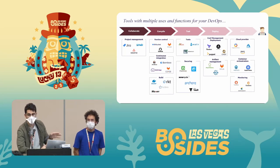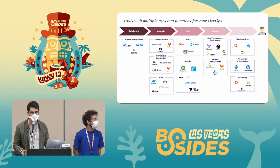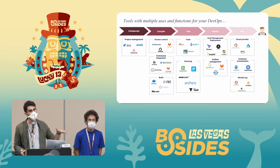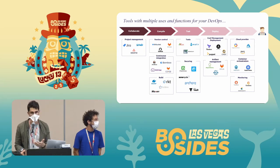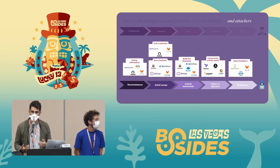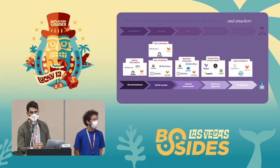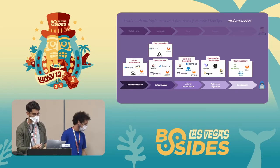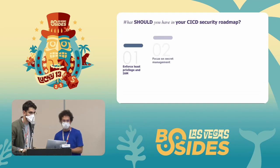A final note: we focused on a small set of tools that reflects what we typically see in client environments. All those tools have great functionalities for DevOps teams, but those same functionalities can be used by attackers. We feel that DevOps teams sometimes want to deploy new solutions before fully hardening and understanding existing ones. Our advice: focus more on quality and security of your current applications before deploying new ones.